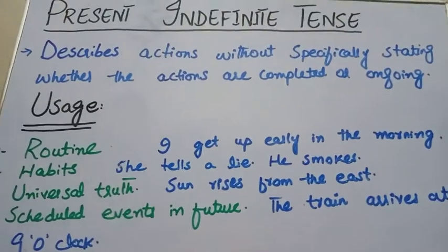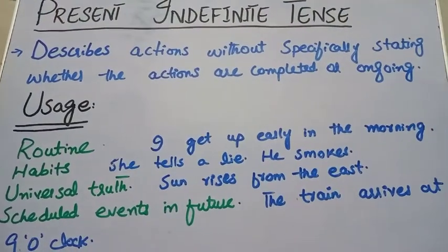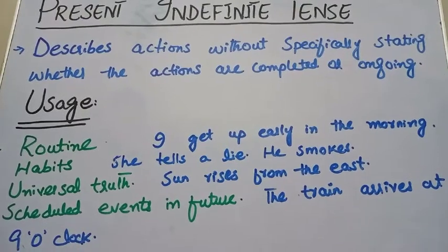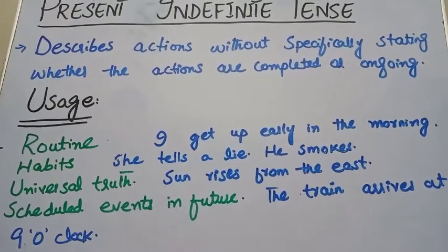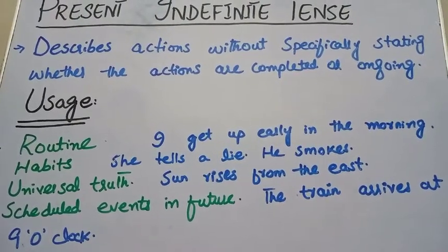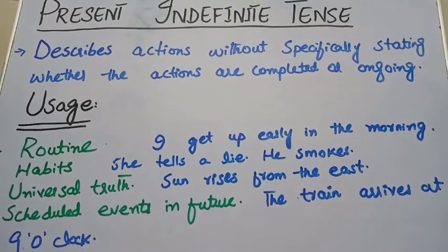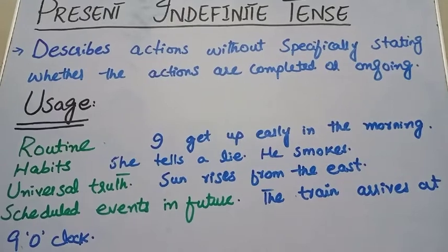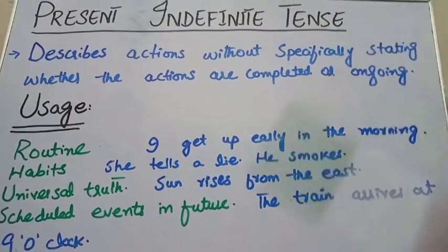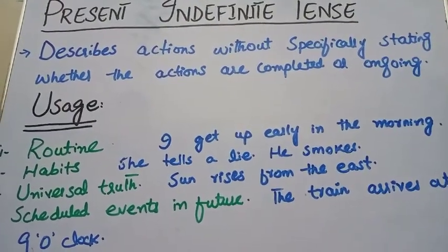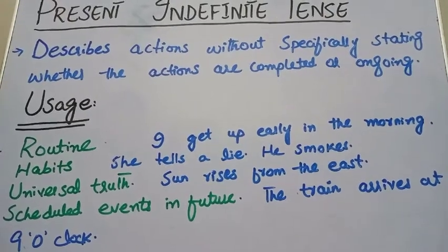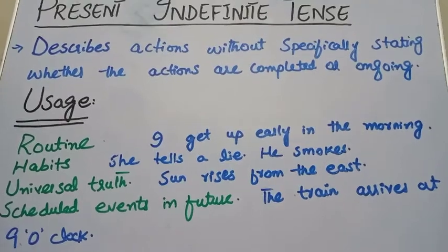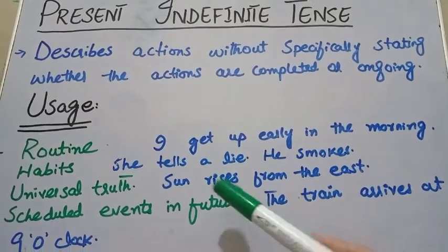Second, the present indefinite tense shows habits — like 'I don't like mangoes,' 'I like spicy food,' 'she tells a lie,' 'he plays cricket,' 'he likes cricket,' 'he smokes.' These are habitual actions.